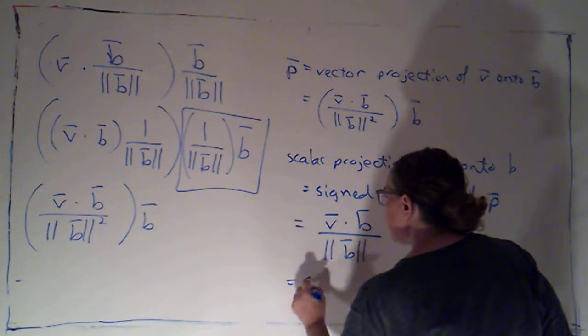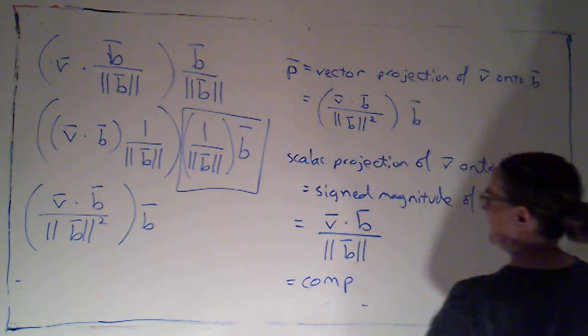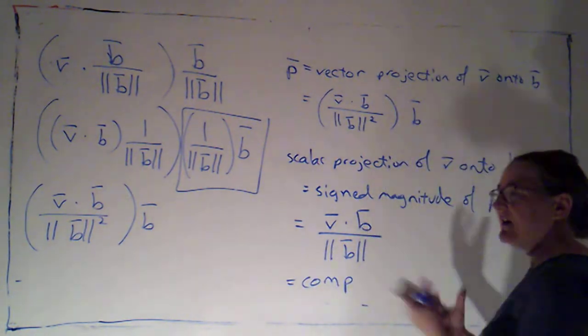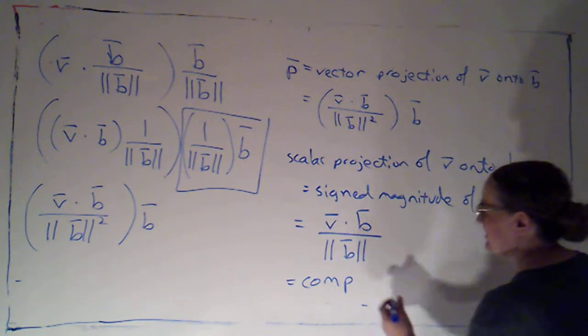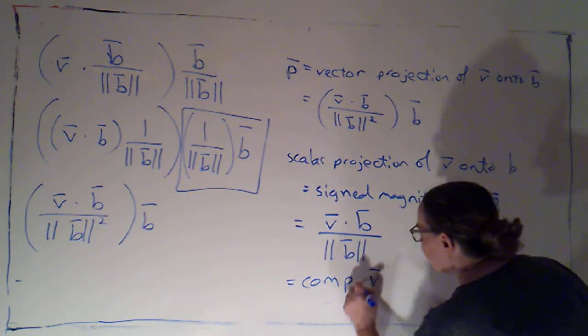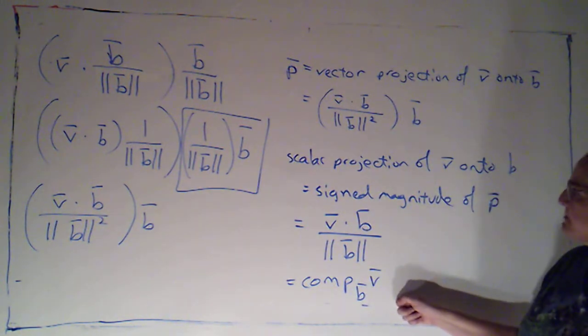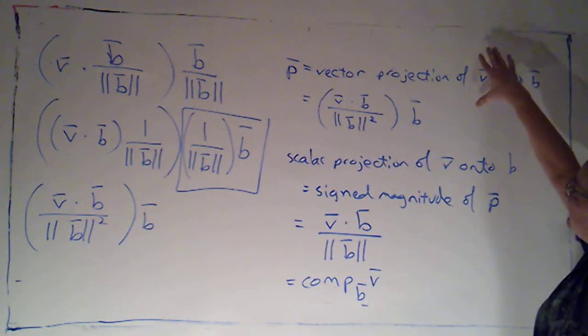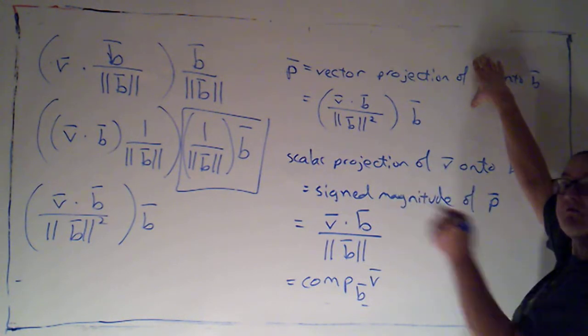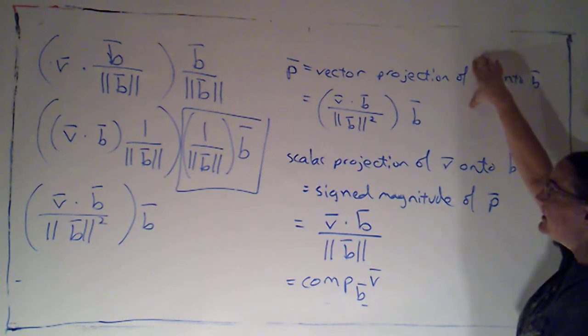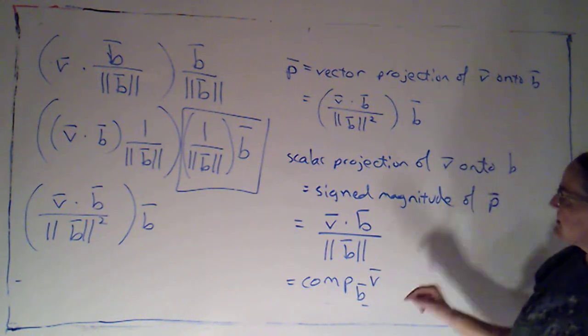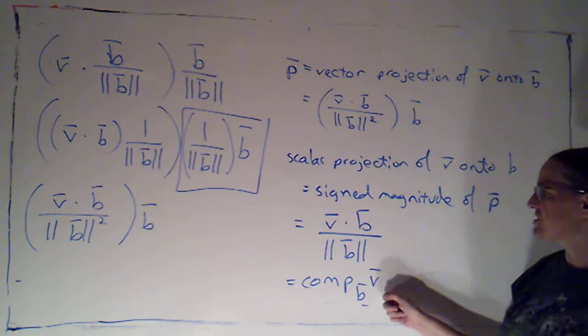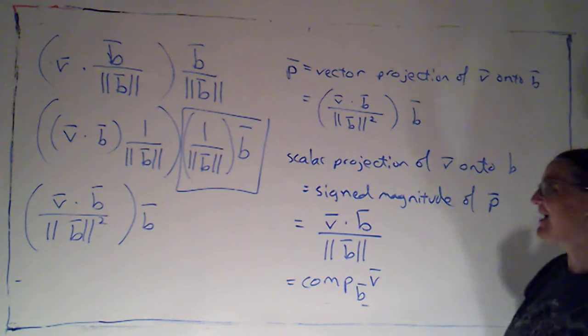So, there's just one factor of the magnitude of B in the denominator. And this is denoted as comp. It's the component. It's the signed magnitude of the component that's parallel to B. Comp V of B. So, the vector projection is the vector that is parallel to B. And the scalar projection is just the signed magnitude of that vector.